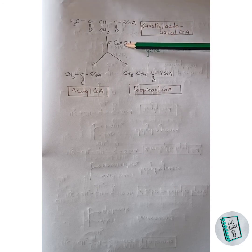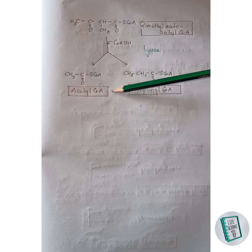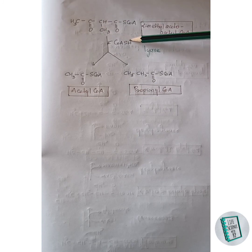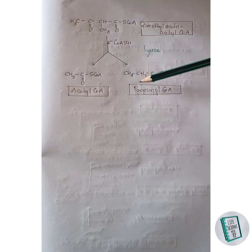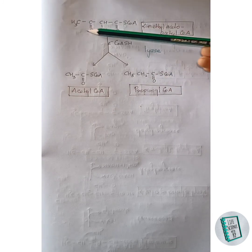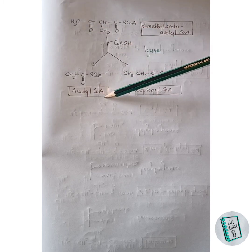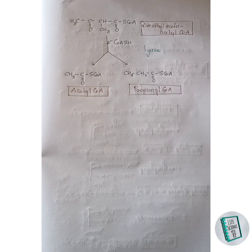Alpha-methyl acetoacetyl CoA undergoes cleavage in the presence of lyase enzyme with addition of CoA, yielding acetyl CoA and propionyl CoA. The cleavage occurs such that the H from the incoming CoA joins with the CH group to form propionyl CoA, and the remaining portion joins with S-CoA to form acetyl CoA. This concludes both the synthesis and degradation of isoleucine.